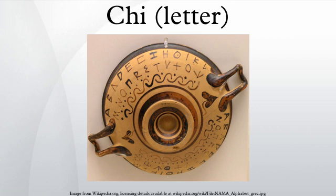Transliteration. Chi is romanized as 'ch' in most systematic transliteration conventions, but sometimes 'kh' is used. In addition, in Modern Greek, it is often also romanized as 'h' or 'x' in informal practice.